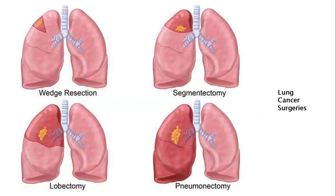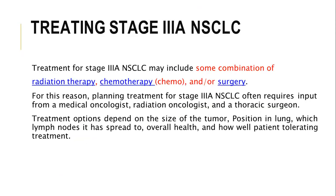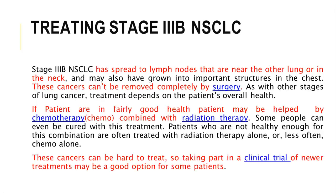For stage 3A, because the cancer has spread more to the lungs and lymph nodes, a combination of radiation therapy, chemotherapy, and surgery is performed. Planning treatment for stage 3A often requires input from a medical oncologist, radiation oncologist, and thoracic surgeon. Treatment options depend on tumor size, position in the lung, which lymph nodes are involved, the overall health of the patient, and how well the patient is tolerating treatment.